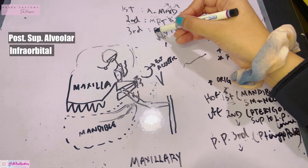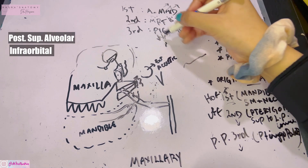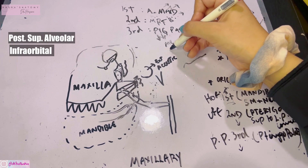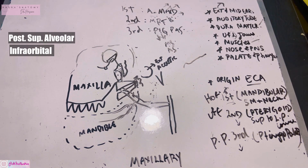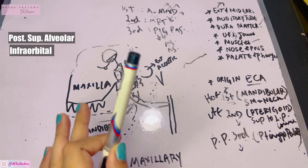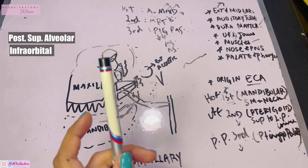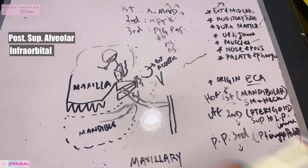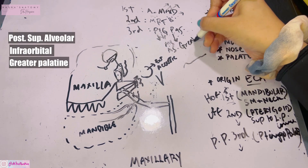The infraorbital artery gives branches including the middle superior alveolar and anterior superior alveolar arteries, which supply the rest of the upper teeth. It also supplies the orbital muscles, the lacrimal sac, the paranasal sinuses, and the upper jaw.